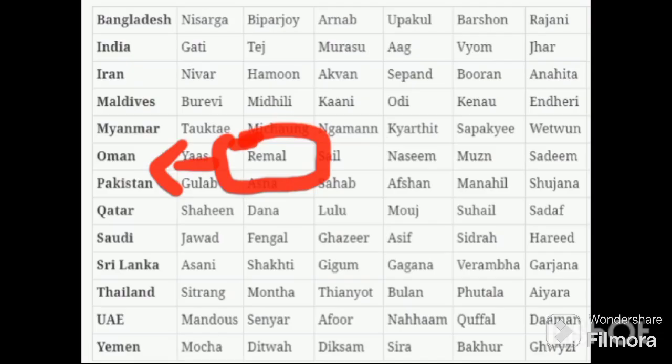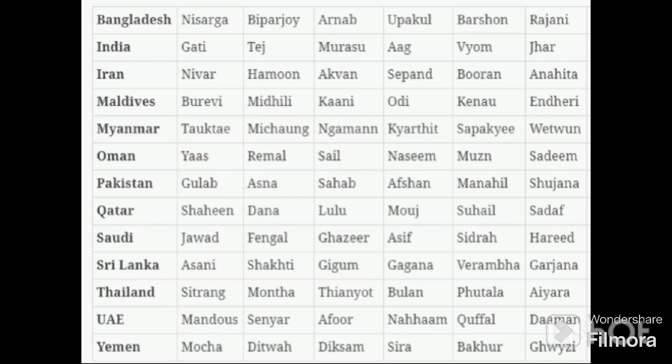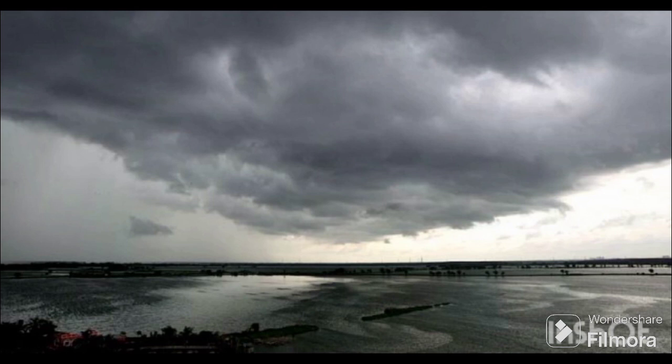Do you know where did the name Rimal originate? The name Rimal, which means sand in Arabic, was given by Oman. This follows the international protocol for naming tropical cyclones in the Indian Ocean region.